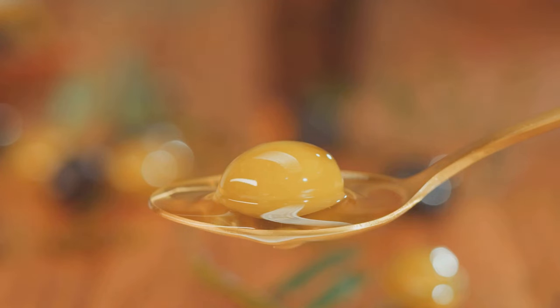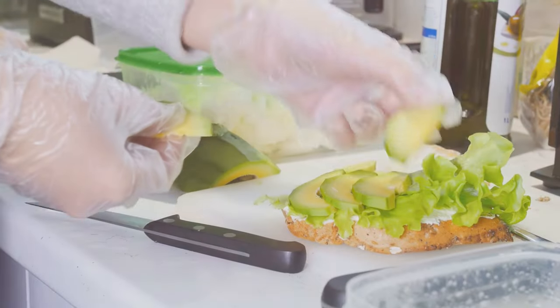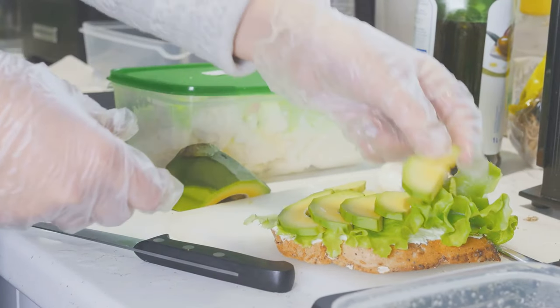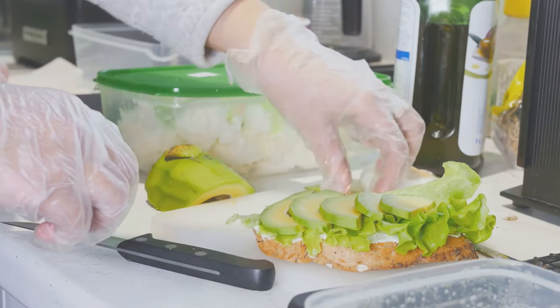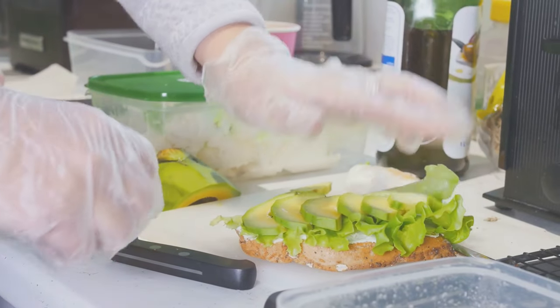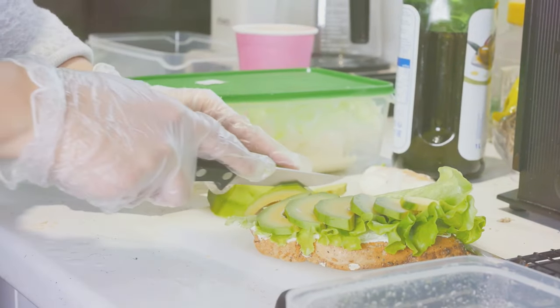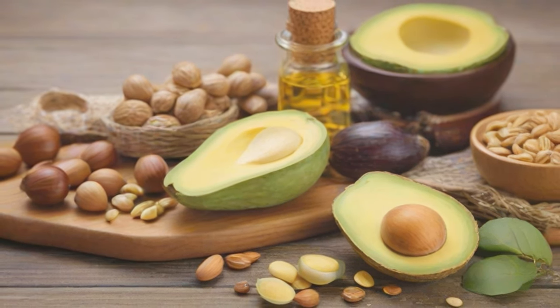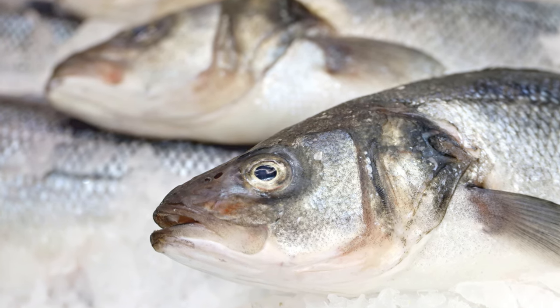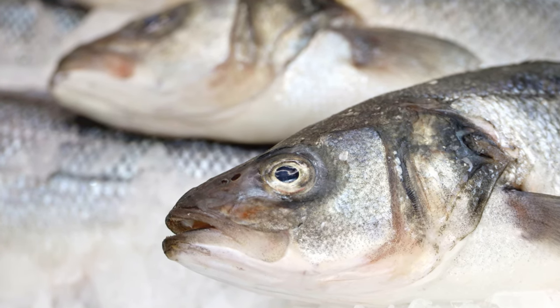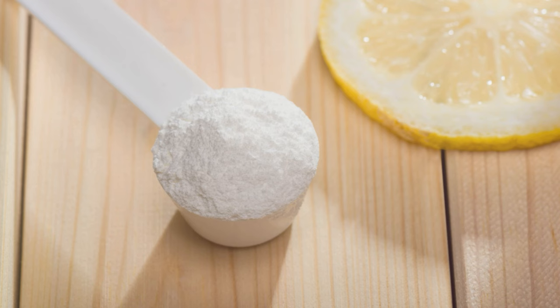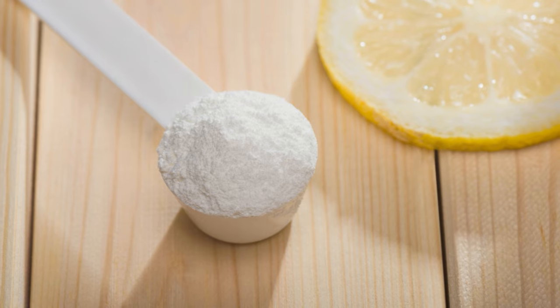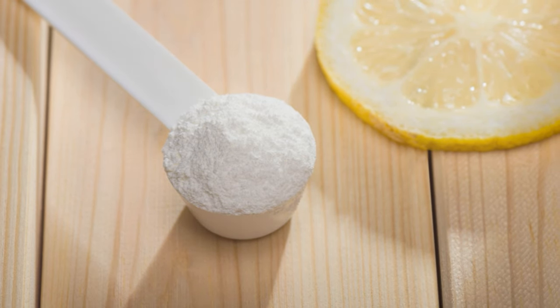But remember, carbohydrates aren't the only game in town. Fats also play a key role. When glycogen stores are low, the body begins to burn fat to keep going. This is a slower process, and it's why marathon runners often hit the wall around the 20-mile mark when glycogen stores are depleted. A diet rich in healthy fats can help delay this point, allowing runners to maintain their pace for longer.